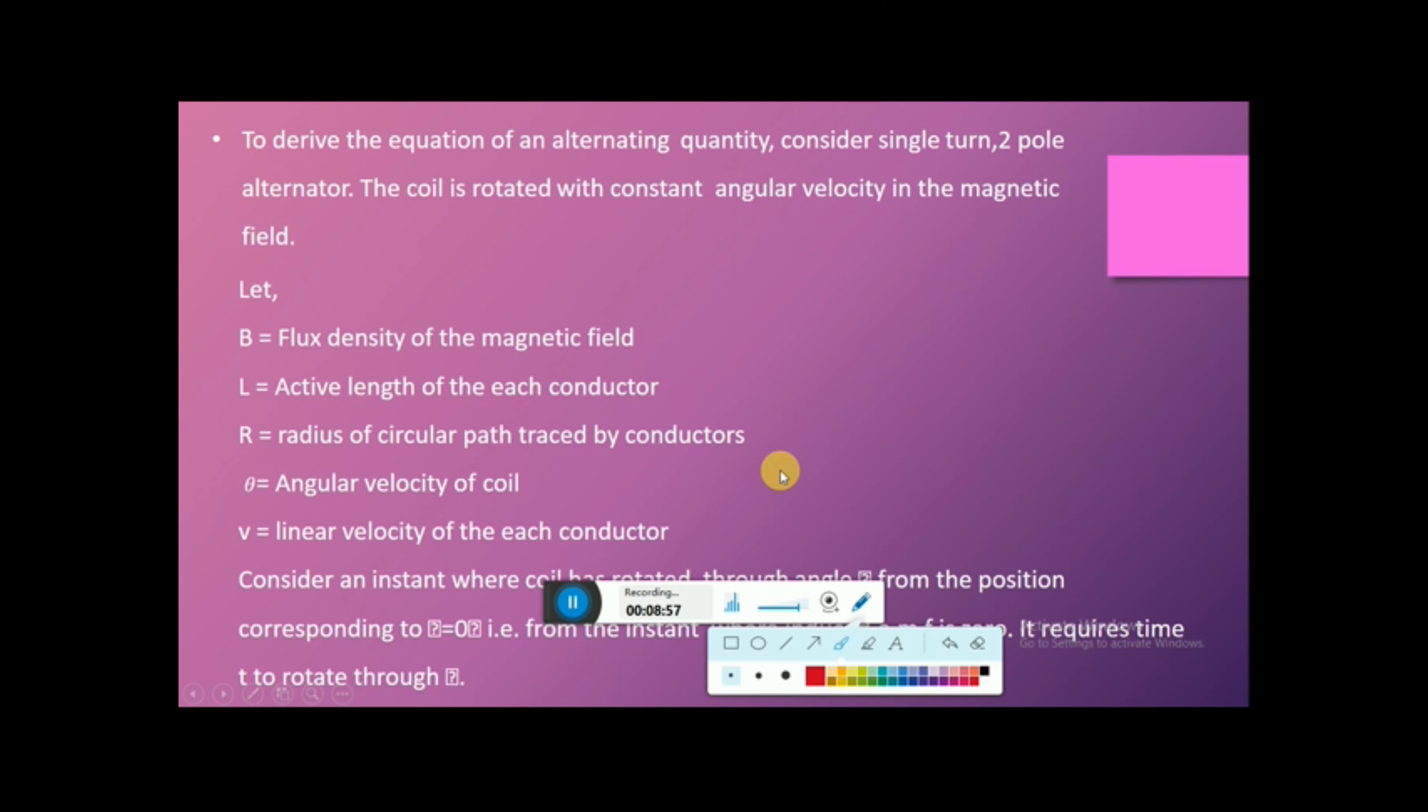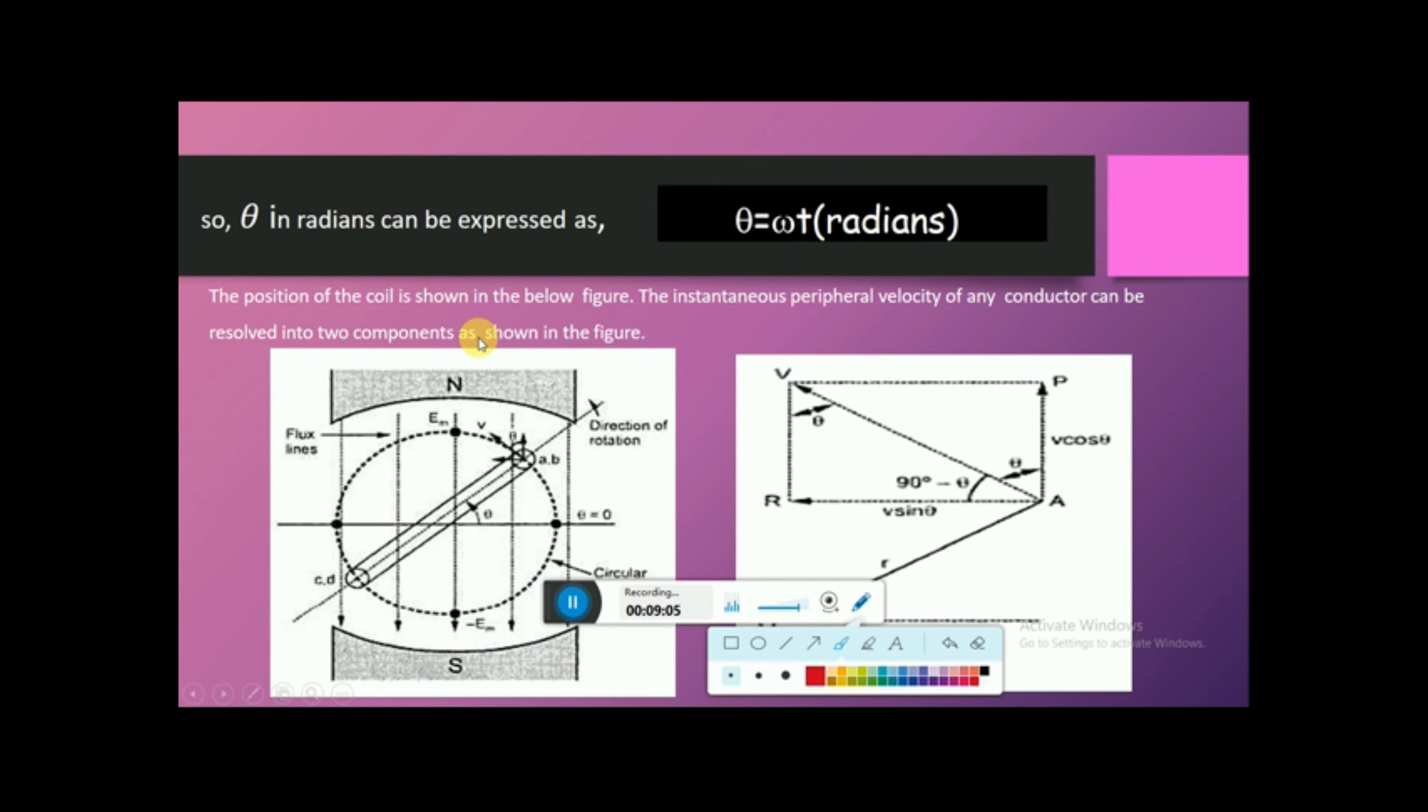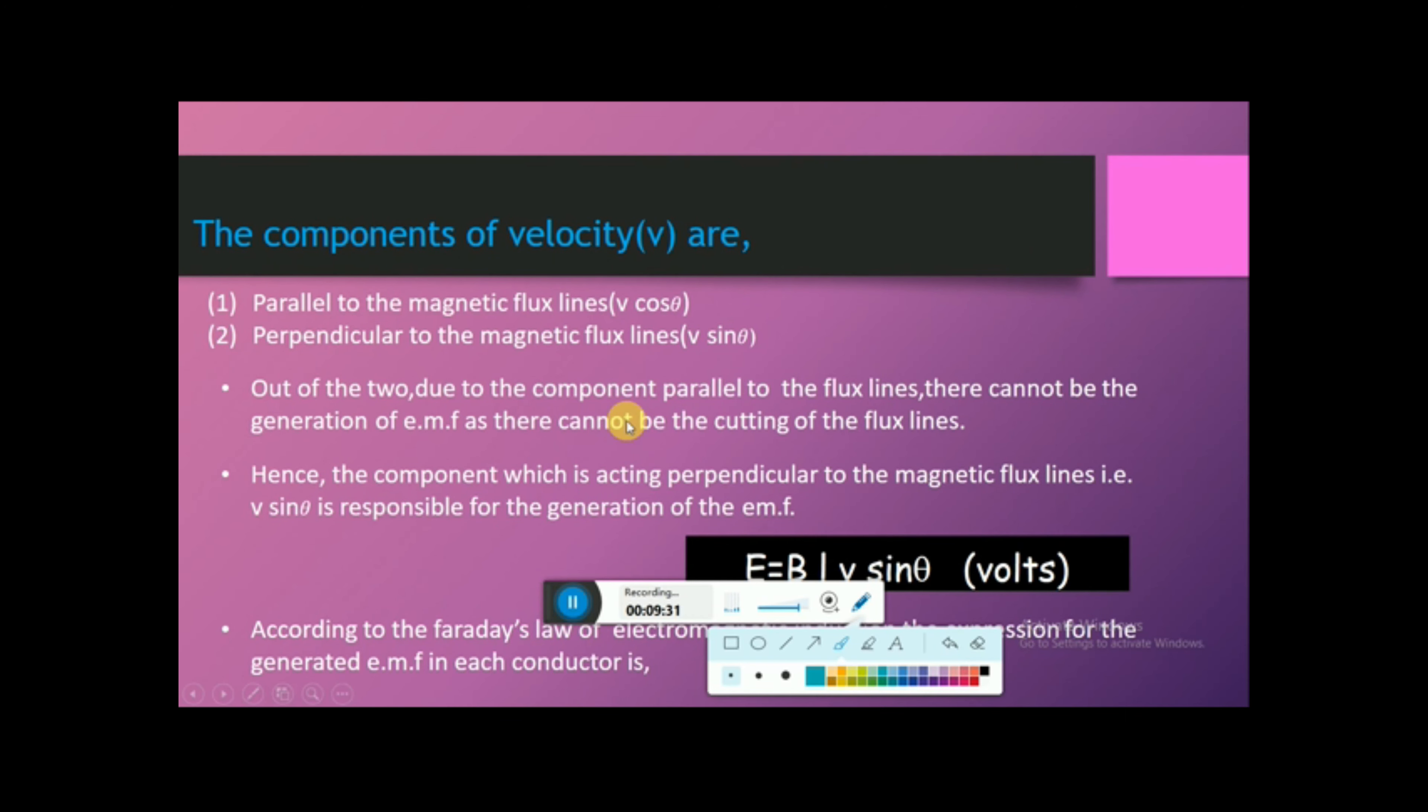To derive an alternating quantity, consider a single turn two-pole alternator. The coil is rotated with constant angular velocity omega. This can be expressed in radians as theta equals omega t with respect to time. The components of velocities are parallel to magnetic flux lines V cos theta, and perpendicular to magnetic flux lines V sin theta. The component perpendicular to the flux lines, V sin theta, is responsible for generation of EMF.